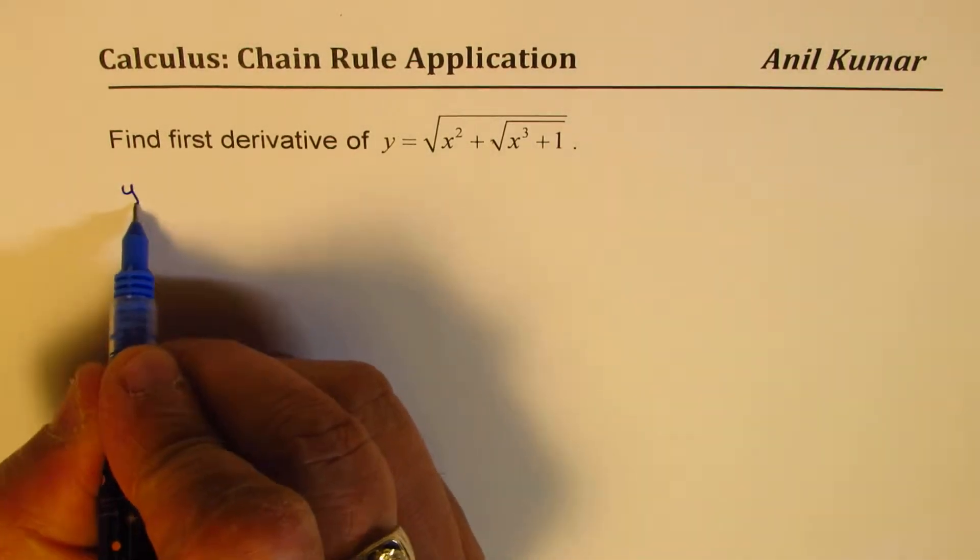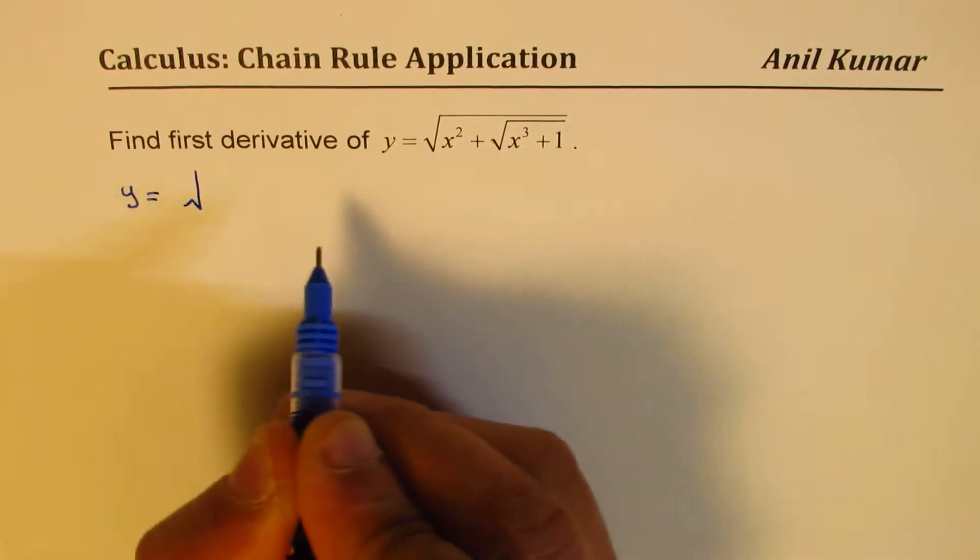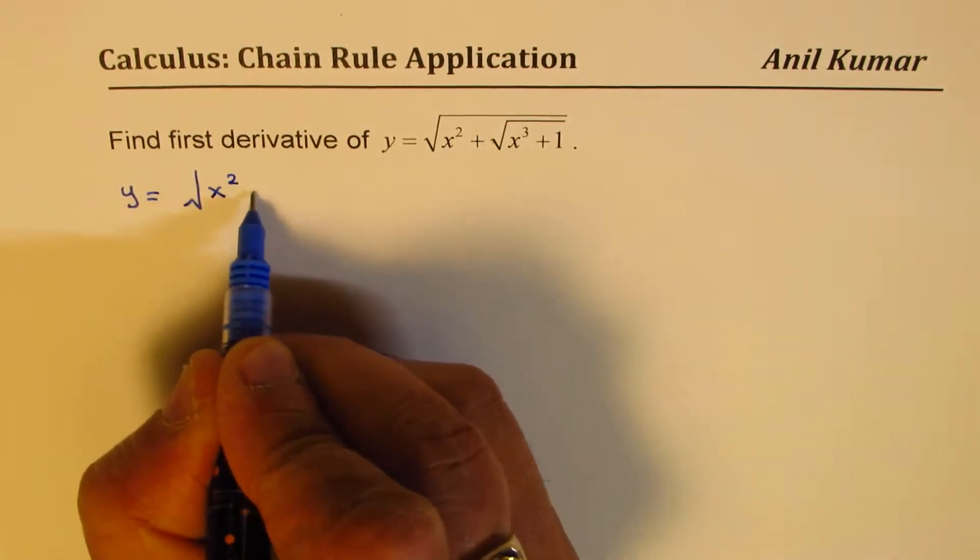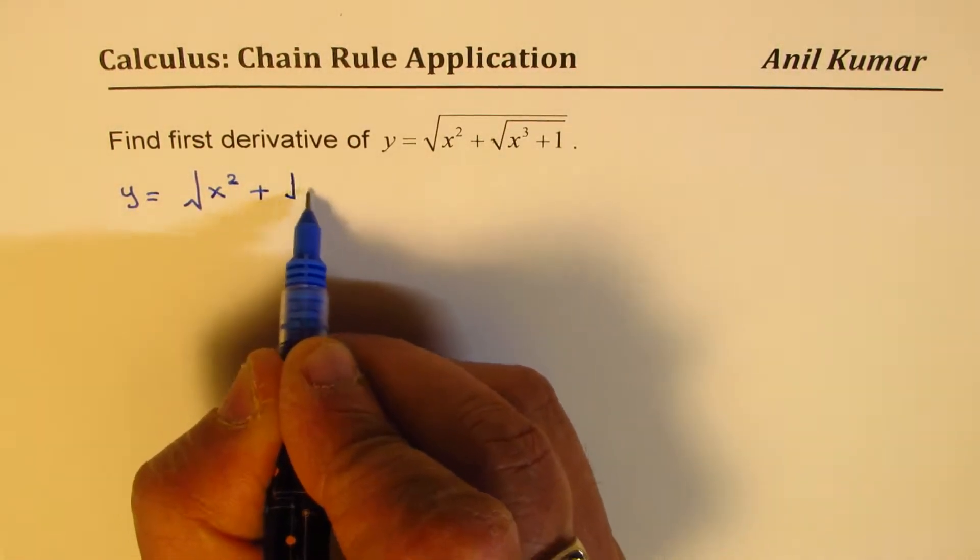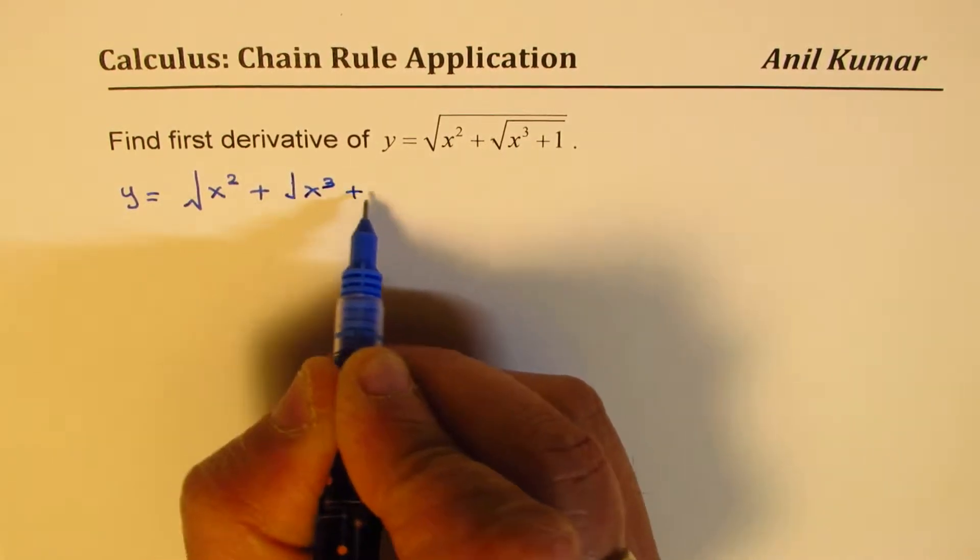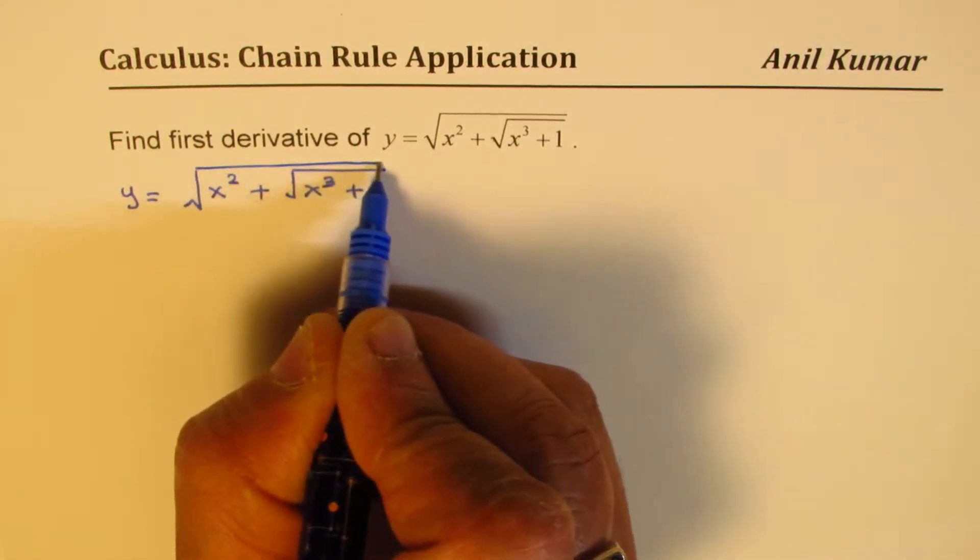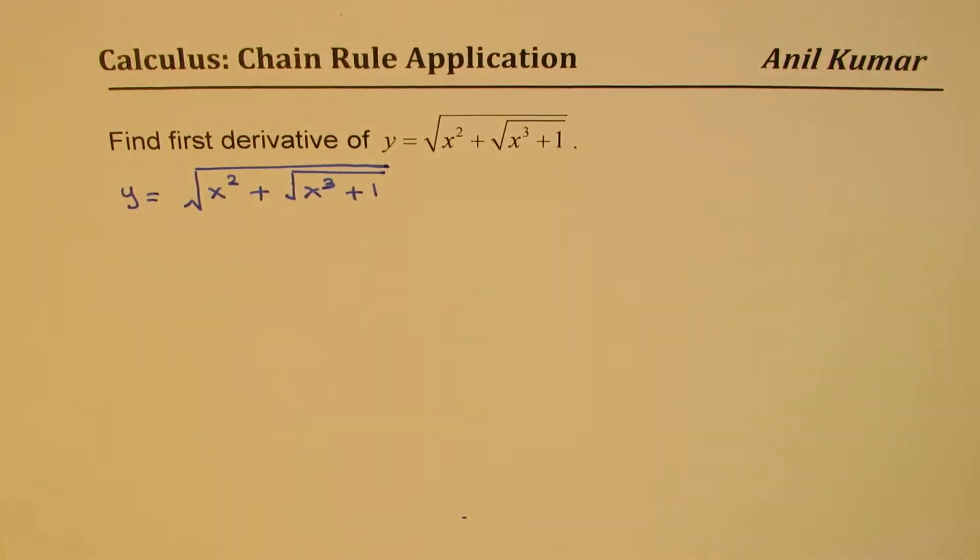We are given the function y equals square root of x square plus, then again square root of x cube plus 1. We need to find the derivative.